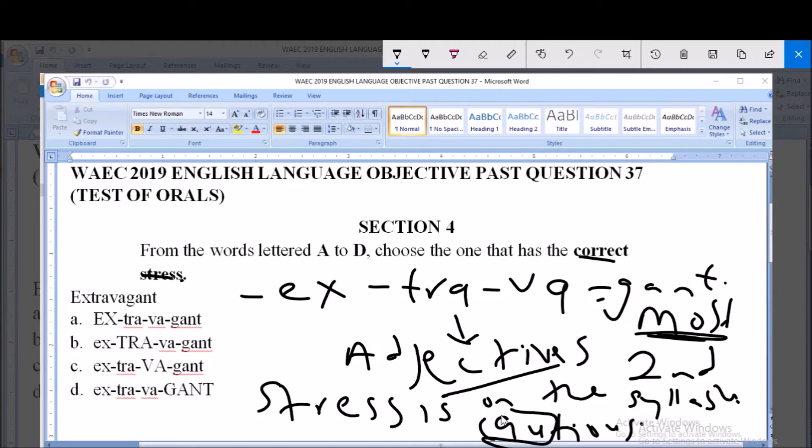But for most adjectives, especially adjectives with four syllables like extravagant, you have the stress pattern in the second syllable. So that is depicted here in option B, with the stress on the second syllable. So the correct answer is B.